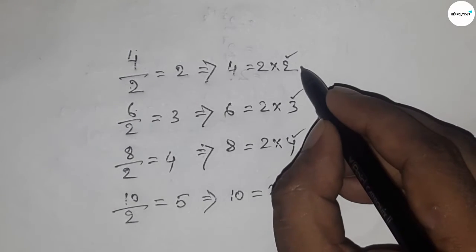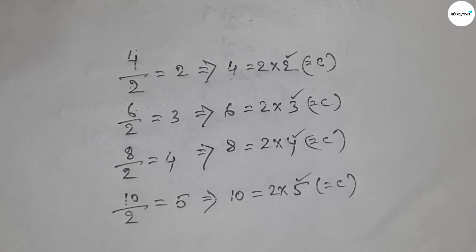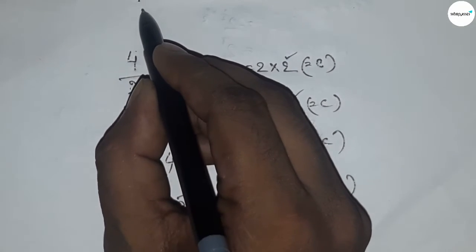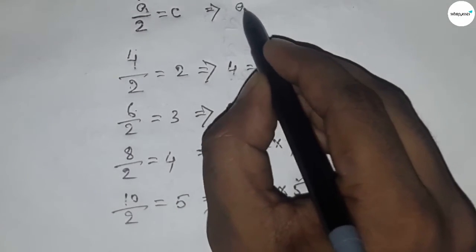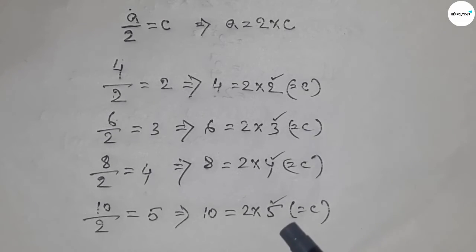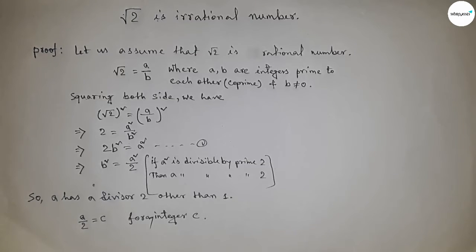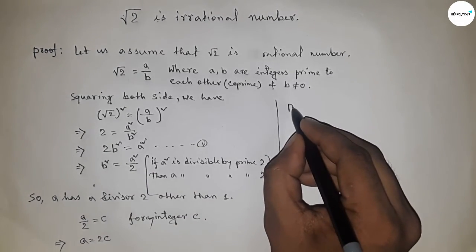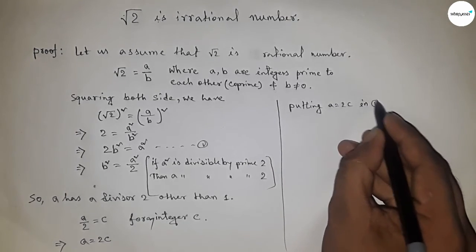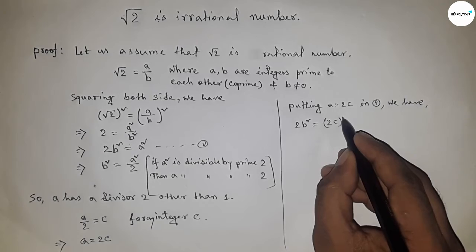So c is any integer, and we can say a equals 2c. Now putting a equal to 2c into equation one, we substitute and simplify: 2b squared equals 4c squared.